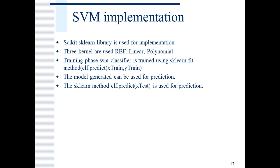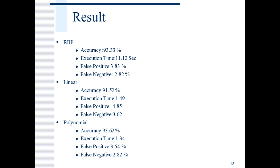Let us now discuss the implementation. Implementation has been done using sklearn library. Three kernels have been implemented: RBF, linear, and polynomial. In training phase, a classifier is trained using sklearn fit method. Here, Xtrain and Ytrain are the training data. The training data is 70% and testing data is 30%. clf.predict generates the label. We can use clf.predict method with the test data point to get the predictions. Next is the result. As you can see here, the accuracy is very high for all three kernels. The execution time is low except for the RBF which takes 11.12 seconds. False positive and false negative is also very low. So, as compared to Naive Bayes, this would be the algorithm of choice.